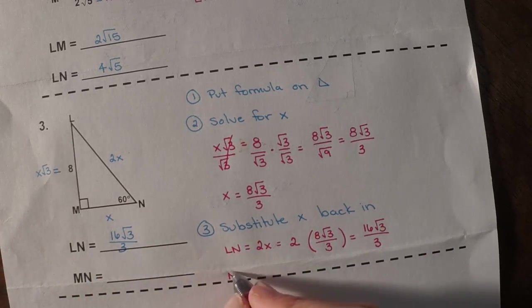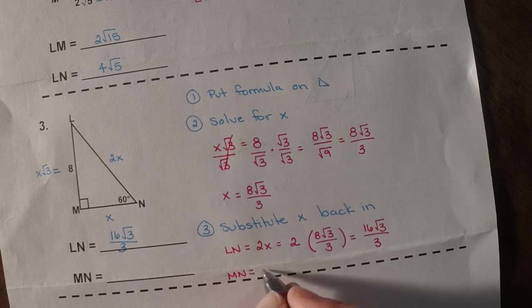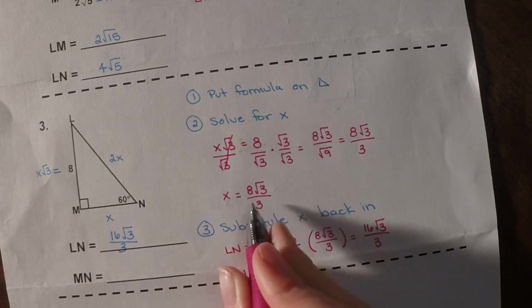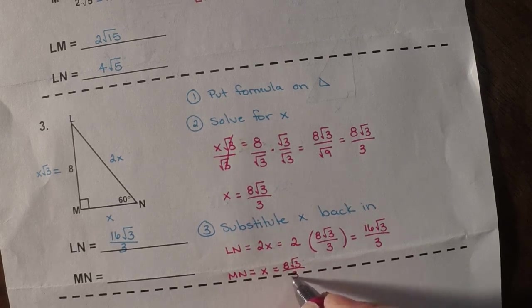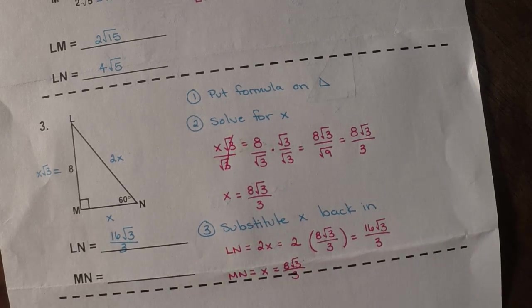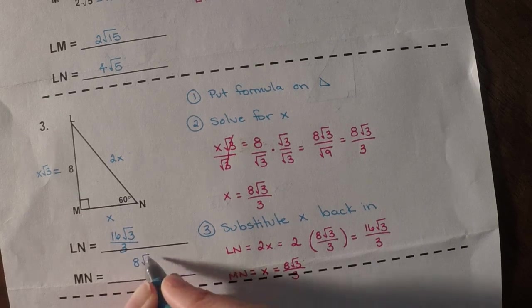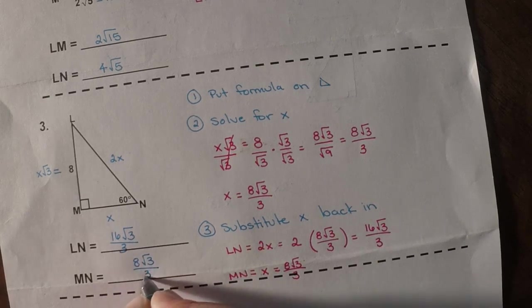Then the last one is MN. MN is just x. Well, x, we already know, is 8 root 3 over 3. So 8 root 3 over 3.